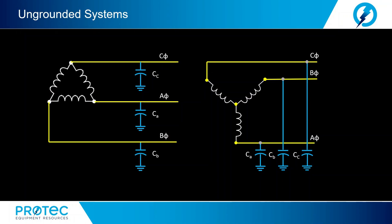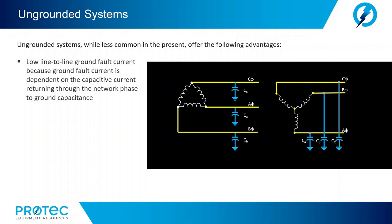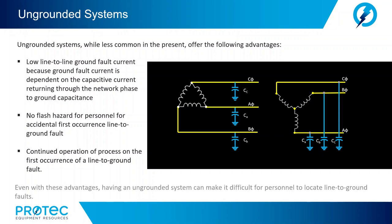Ungrounded systems, while less common today, offer the following advantages: low line-to-ground fault current because ground fault current is dependent on the capacitive current returning through the network phase-to-ground capacitance; no flash hazard for personnel for accidental first occurrence line-to-ground fault; and continued operation of processes on the first occurrence of a line-to-ground fault. However, having an ungrounded system can make it difficult for personnel to locate line-to-ground faults. It also places personnel at risk during maintenance and offers little control over transient overvoltage.